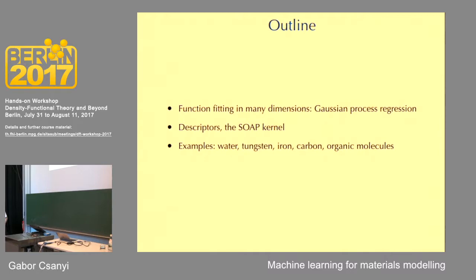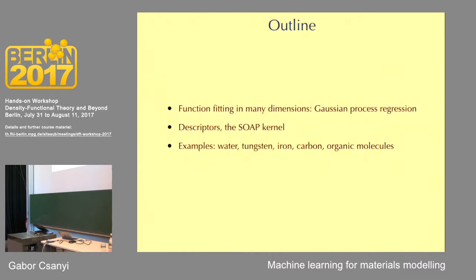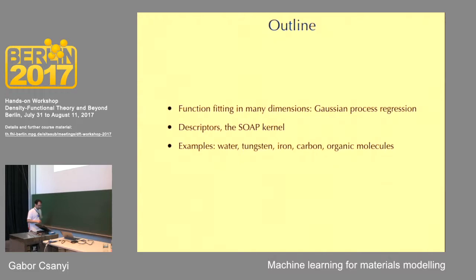The talk is in roughly three parts. I'll tell you about how to fit functions — that is the way we're going to speed things up by fitting functions in many dimensions. I'll show you through the example of Gaussian process regression, but I'll point out that there are other formulations of the same problem. Then I'll tell you about descriptors, specifically one from my group called SOAP, which we think can solve a lot of problems in materials modeling. I'll give examples ranging from water through tungsten, iron, carbon, and more material-related things.